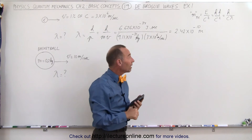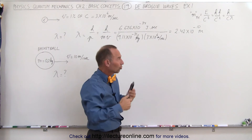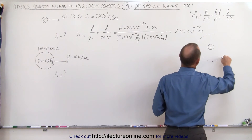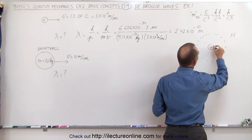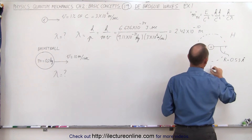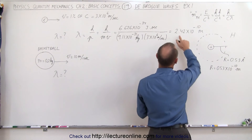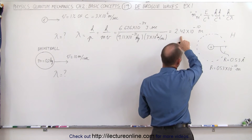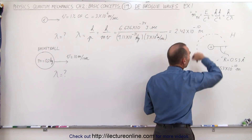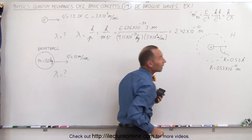Even though that is a very small wavelength, it is actually measurable — we can work with it. The size of a hydrogen atom is indicated by the Bohr radius: for a single proton with a single electron orbiting the nucleus, the Bohr radius r is equal to 0.53 angstroms, which means the radius equals 0.53×10⁻¹⁰ meters.